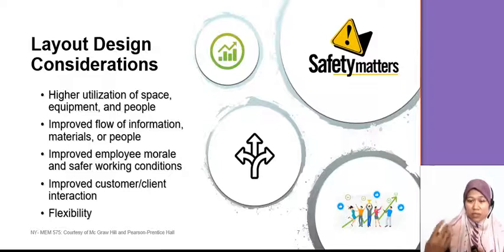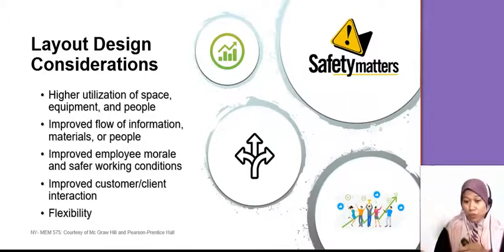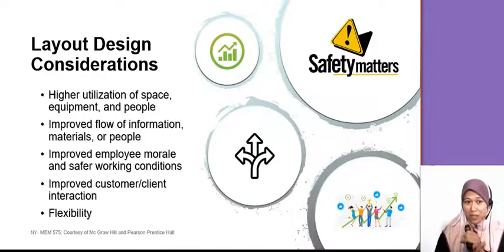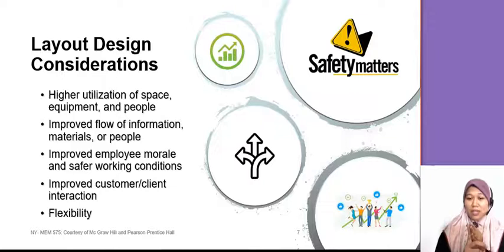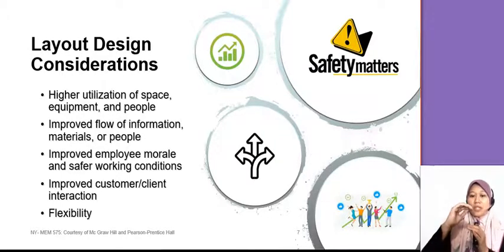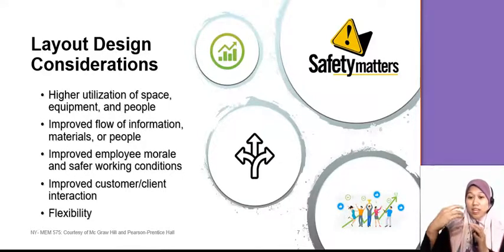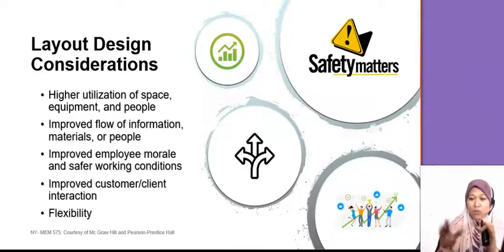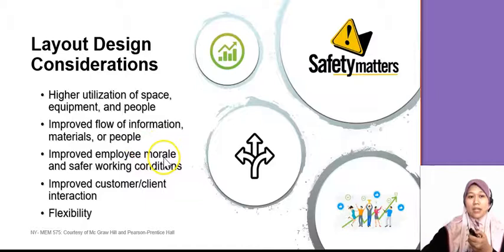Before you want to do a re-layout, or if you have moved to a new factory and want to design your layout, you need to consider several factors. First, the utilization of space, equipment, and people — arrange things so you get high utilization. Also improve the flow of information, material, and people. Make sure the production line is a straight line; avoid back-and-forth paths because that makes the flow not smooth. The flow should be based on the process sequence so that the flow in your factory is smooth.